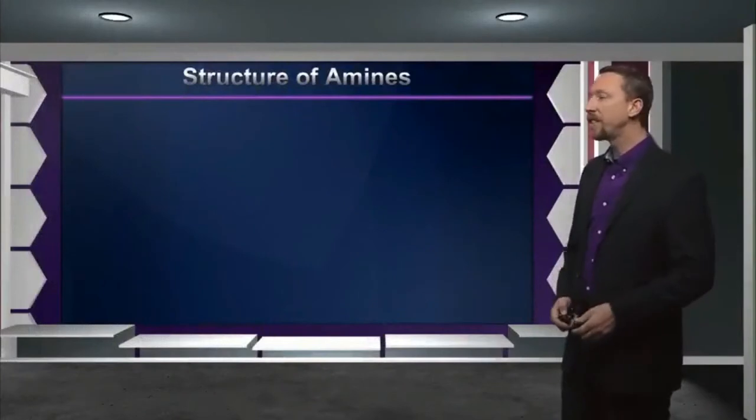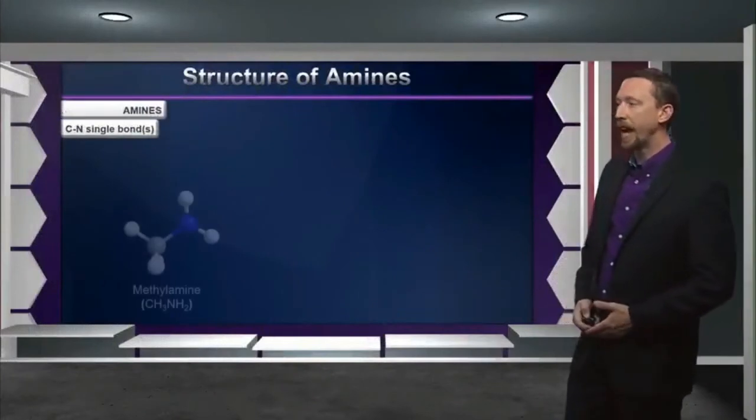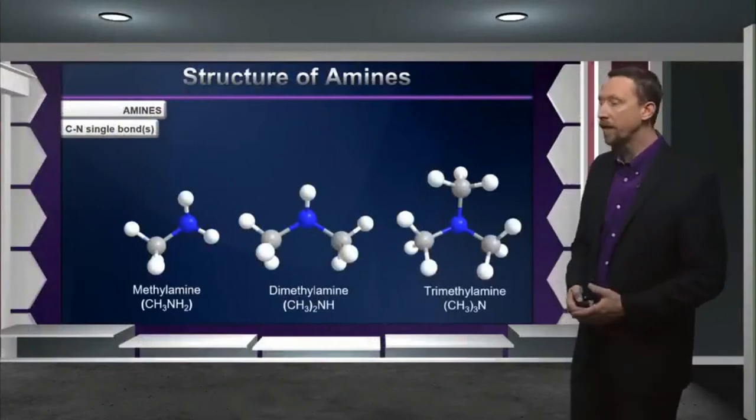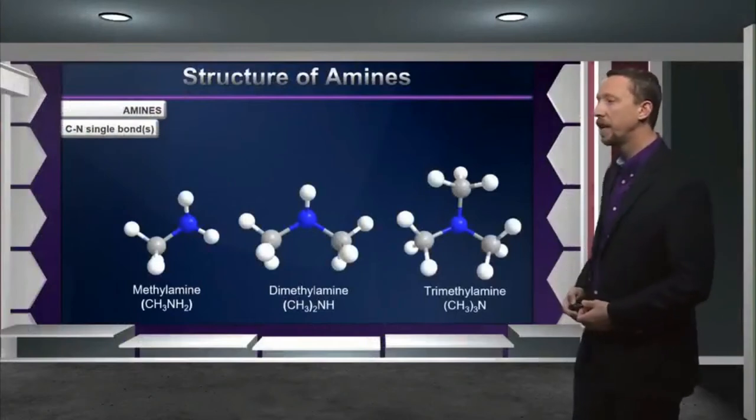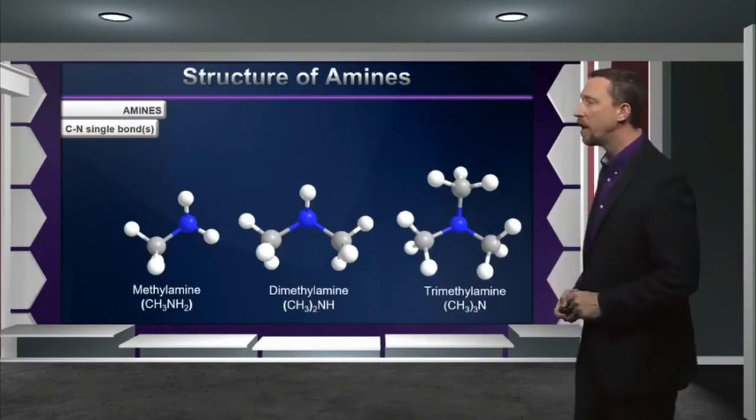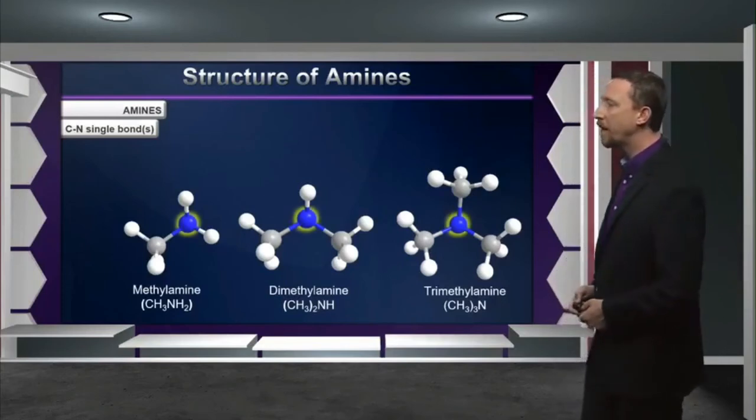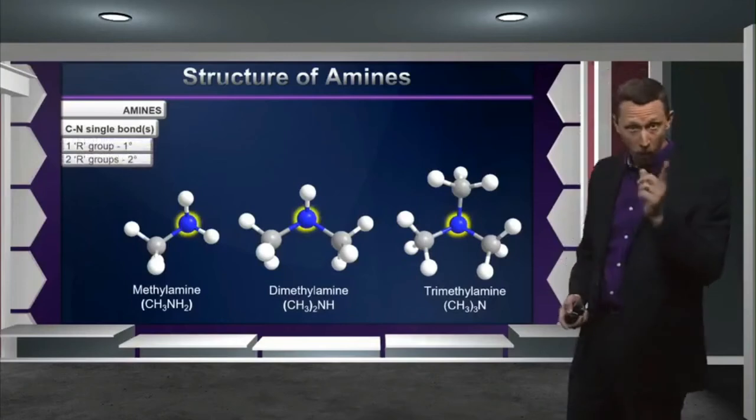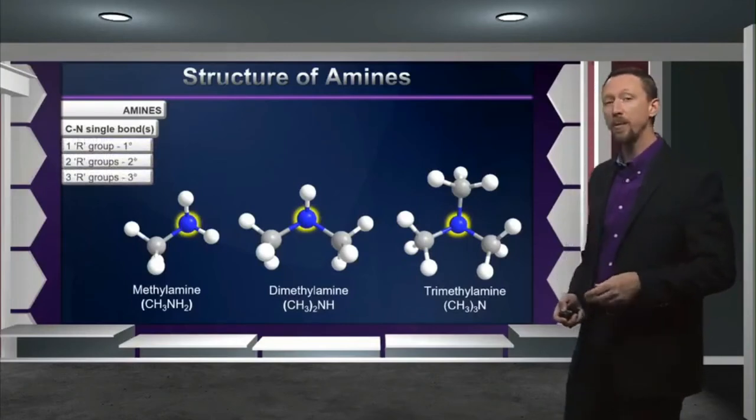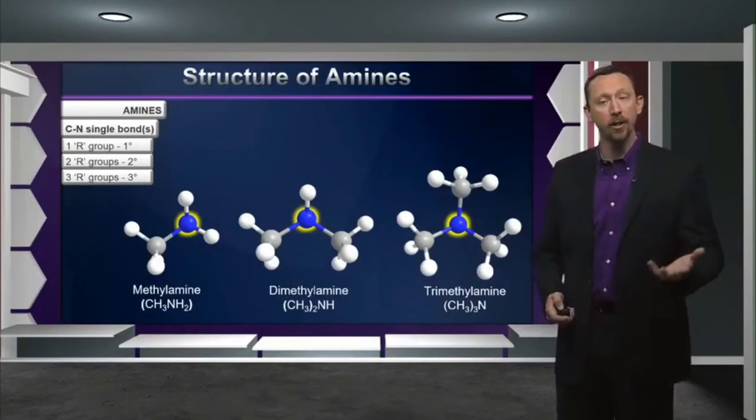Amines consist of essentially a nitrogen atom that is chemically bonded to what we call an R group or some kind of a carbon-containing organic motif. But remember, nitrogen can have up to three different single bonds. So we have a situation where we can have compounds that contain nitrogen with one R group, two R groups, or even three R groups, in which case we call them primary, secondary, and tertiary amines.